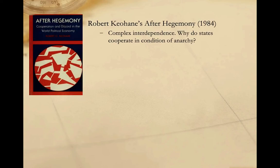If the roots of neorealism can be traced back to Kenneth Waltz's 1979 book Theory of International Politics, then the foundations of neoliberal international relations theory must be traced to two seminal works. The first was Robert Keohane's book After Hegemony: Cooperation and Discord in the World Political Economy. Keohane, along with his later co-author Joseph Nye, developed the theory of complex interdependence to make sense of cooperation between states in global politics.